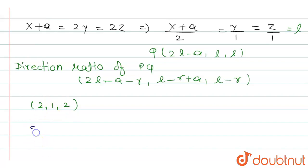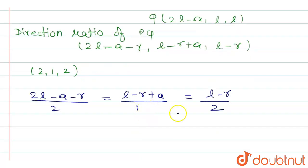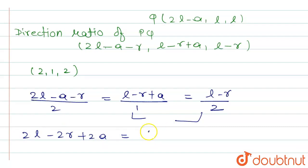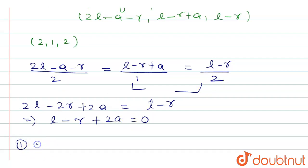Since the direction ratios are proportional to 2, 1, 2, we write: (2l − a − r)/2 = (l − r + a)/1 = (l − r)/2. From the first and second ratios: 2l − a − r divided by 2 equals l − r + a divided by 1. From the second and third: l − r + a equals l − r. Setting up these equations gives us: l − r − 2r + r − r + 2a = 0.